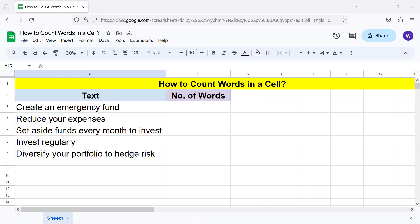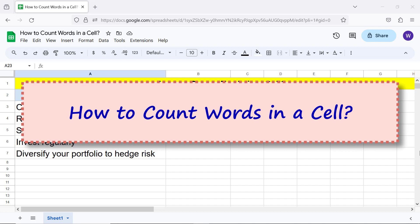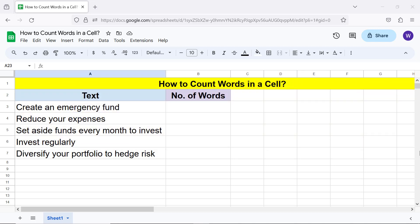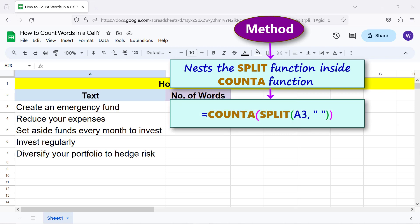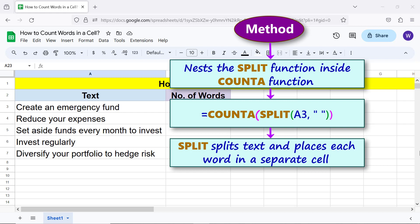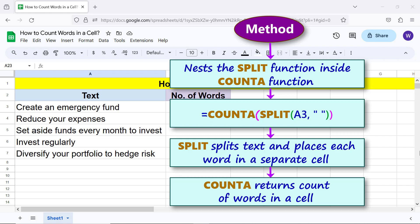How to count words in a cell. This method nests the SPLIT function inside COUNTA function. The syntax of the combo function is: SPLIT splits text and places each word in a separate cell, COUNTA returns count of words in a cell.